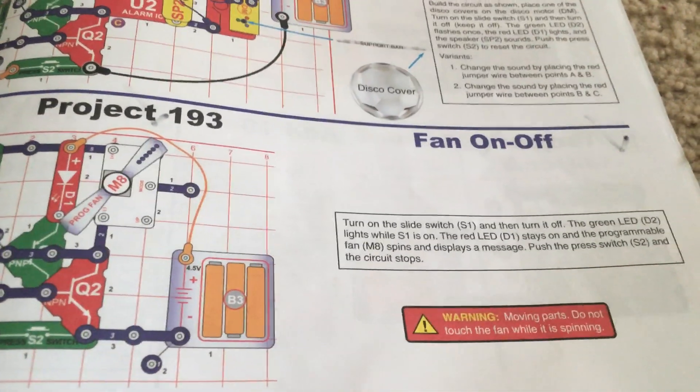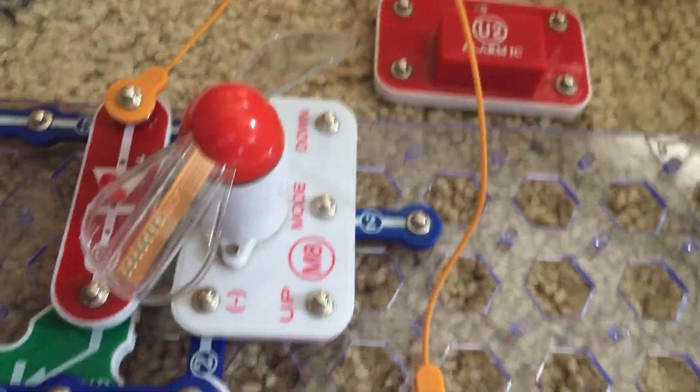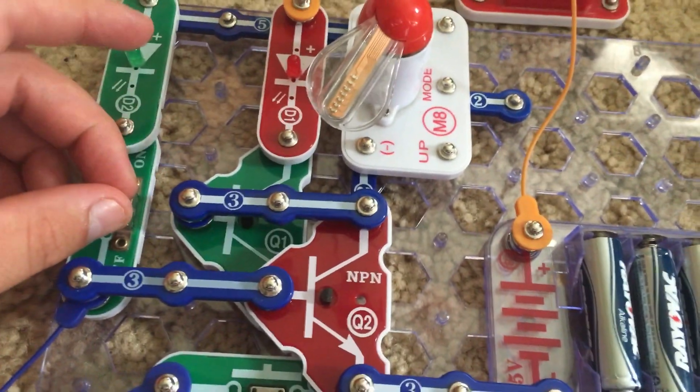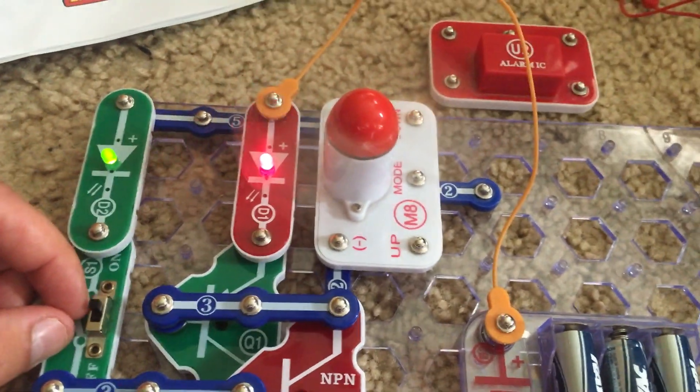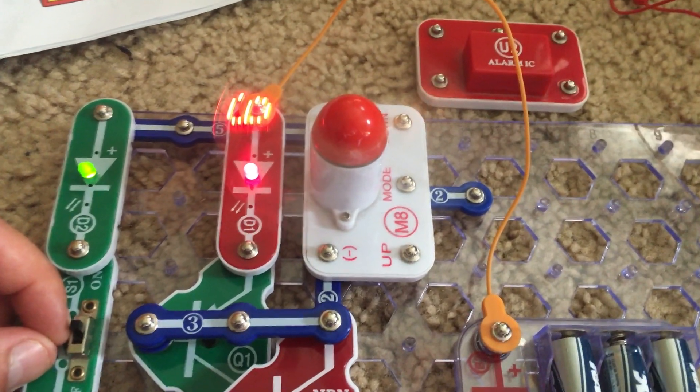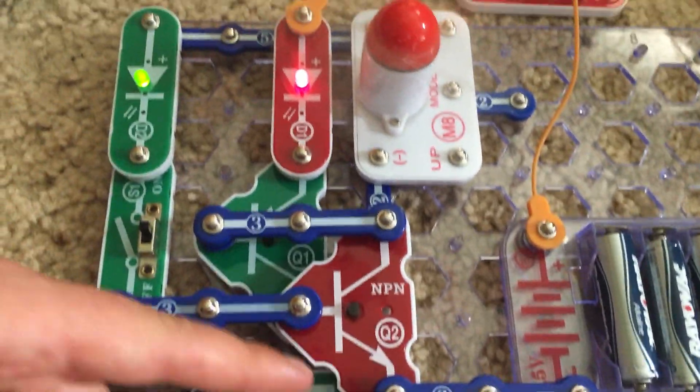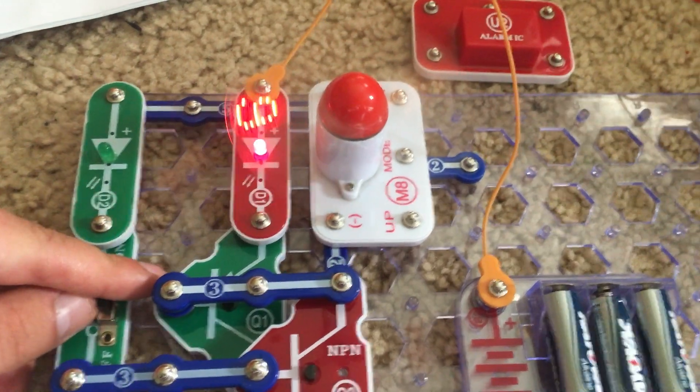Project 193 is fan on and off. For this project we're using the programmable fan and we have the transistors and LEDs again. Turn on the slide switch and the fan will all come on. Turn off the slide switch and only the green LED will turn off.